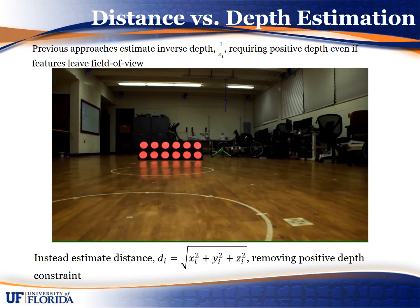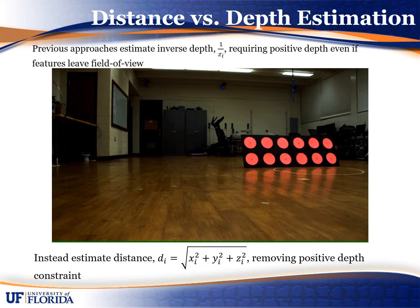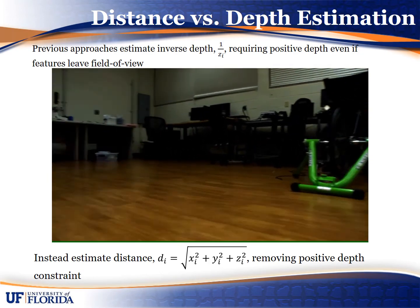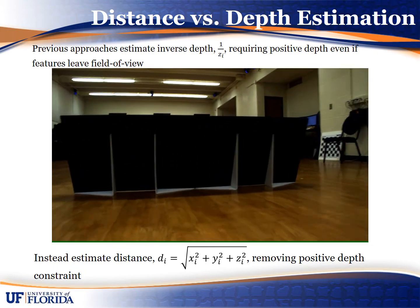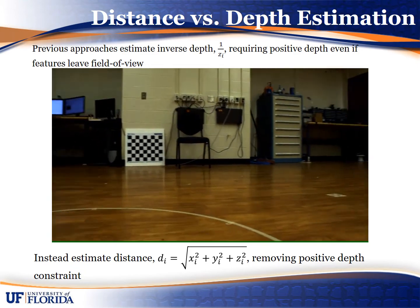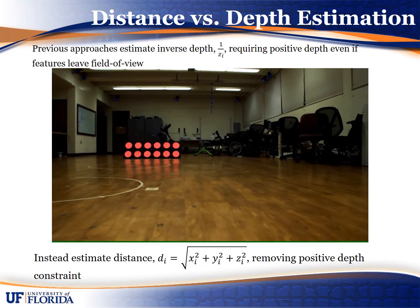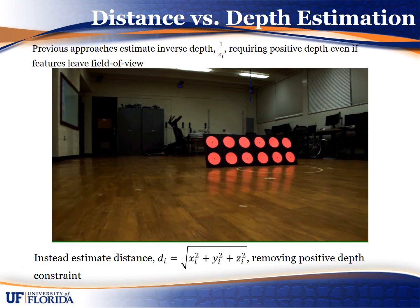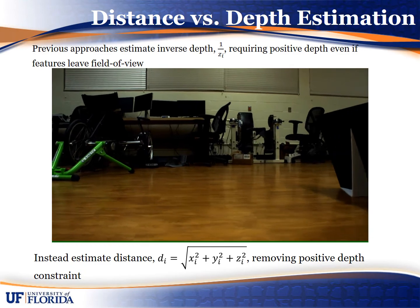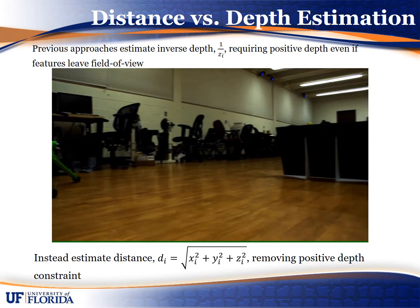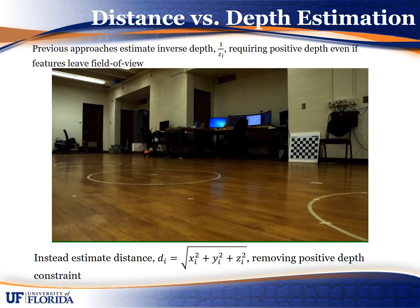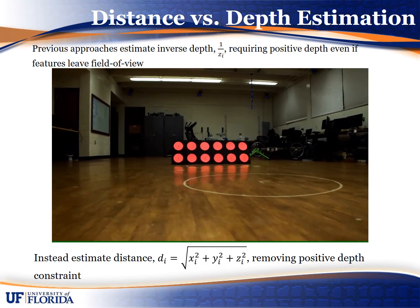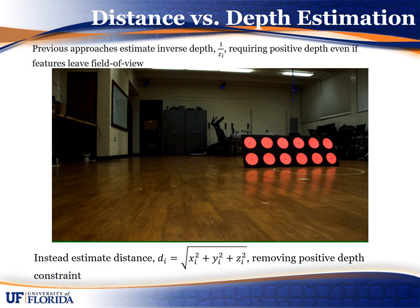Traditionally, one of the assumptions in image-based estimation methods is called the positive depth constraint. In typical methods where the object is assumed to remain in the camera field of view, it's a mild assumption that the coordinate along the axis directed out of the camera lens remains positive. However, if we allow the target to leave the field of view, this constraint becomes very restrictive. To address this, we reformulate the positive depth constraint as an assumption that the distance from the coordinate frame attached to the camera to the target remains positive. We use this new formulation along with a new adaptive control method called integral concurrent learning to identify the structure in the scene.